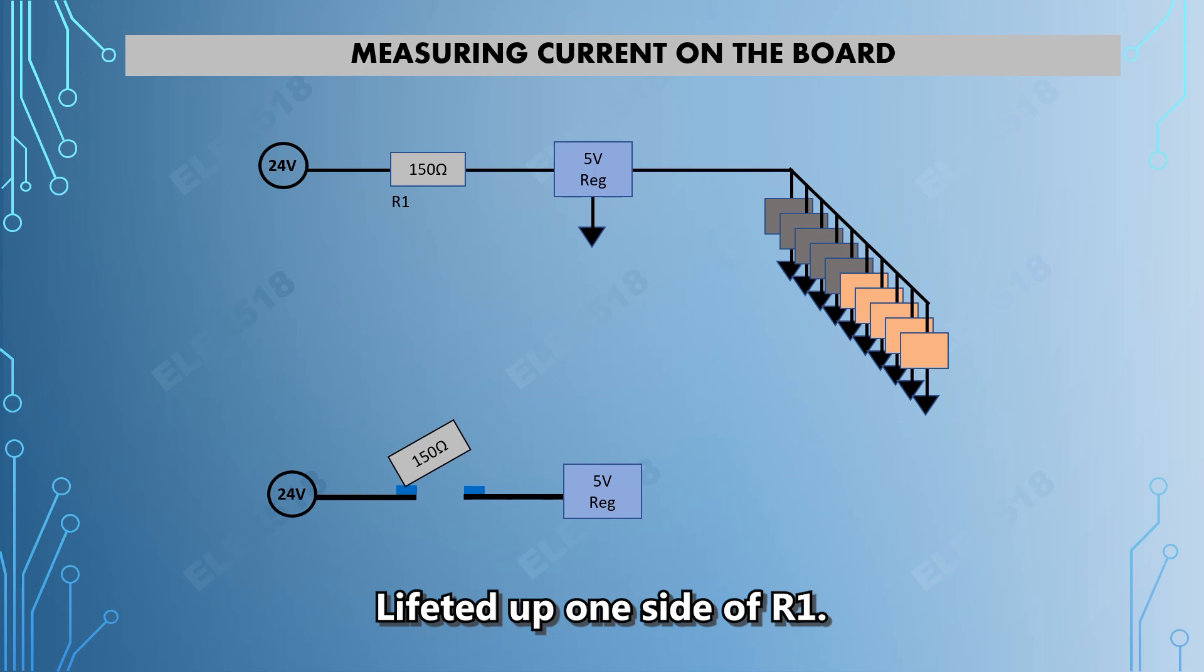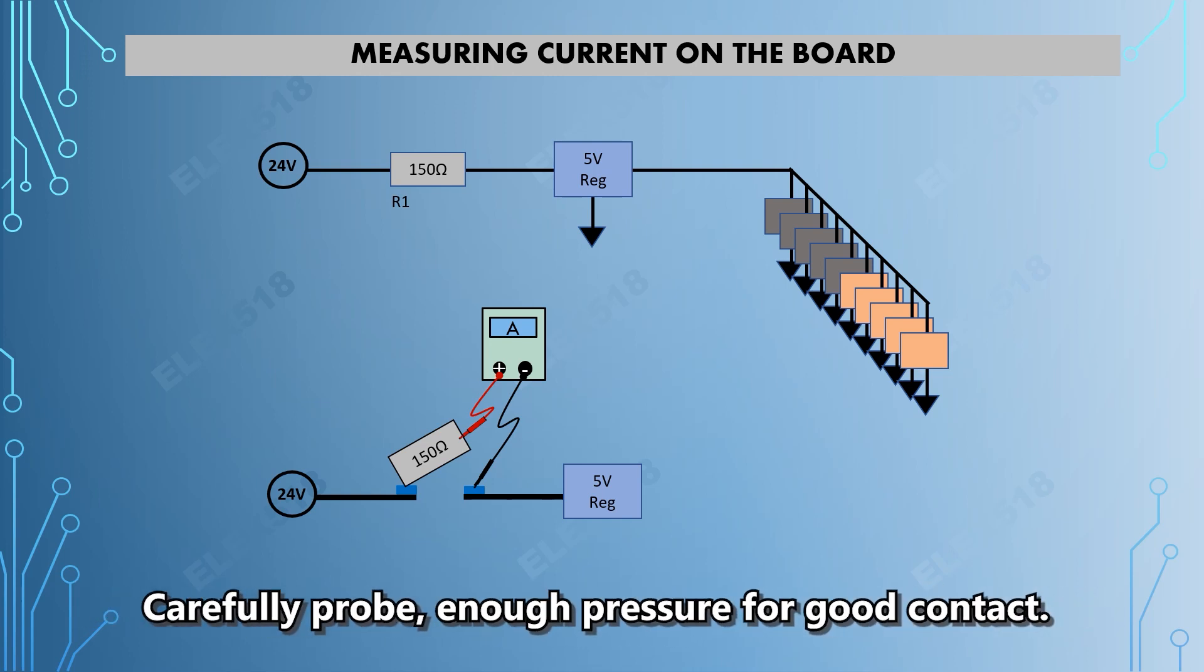The first thing that I did was I lifted up R1 to disconnect from the input of the 5 volts regulator. I selected this area because from here I can see wide access to set up the multimeter probes.